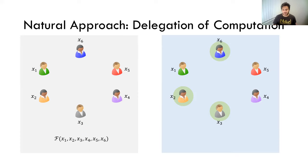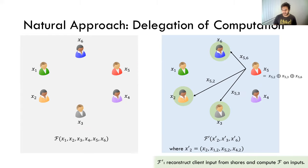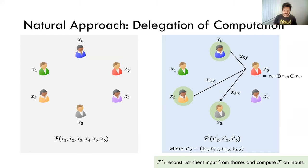They need to run a protocol computing some function F prime that's related to F. It needs to incorporate the inputs of all the other parties. For input privacy, parties can't directly send their inputs. So what they're going to do is additively secret share their inputs and give each of these servers only a share of their input. So the servers now have as input into this new functionality F prime not just their own input, but shares that all the other clients have sent to them. F prime reconstructs all the client inputs from these shares and then computes F on the reconstructed inputs.